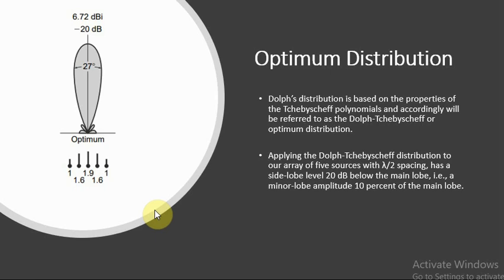Let's take an array of 5 sources with lambda by 2 spacing. The amplitude distribution is 1, 1.61, 1.9, 1.61, 1, and yields the optimum pattern with the side lobe levels 20 dB below the main lobe, that is 10 percent of the main lobe. The beam width is 27 degrees, which is less than binomial distribution.